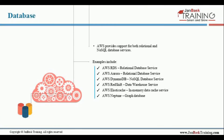Within the database segment we saw a number of options. AWS provides support for both relational and NoSQL database services. Examples include AWS RDS, which is the Relational Database Service, and Aurora, which is also a relational database service.